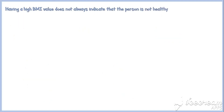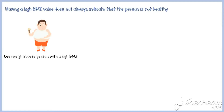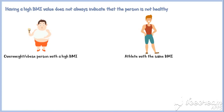However, having a high BMI value does not always indicate that the person is not healthy. For example, if we take an overweight or obese person with a high BMI value and an athlete with the same BMI value, the athlete may have a less amount of body fat compared to the other person. The high BMI value in the athlete may be due to increased muscularity as a result of his active lifestyle.